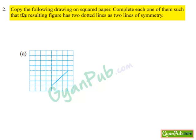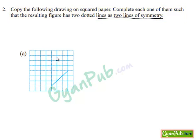The given question is: copy the following drawing on square paper and complete each one of them such that the resulting figure has two dotted lines as two lines of symmetry. Here they have given some dotted lines and a part of the figure. The given information is that the two dotted lines act as two lines of symmetry. They have given us a part of the closed figure and asked us to draw the remaining part such that the dotted lines will be the two lines of symmetry. Taking the horizontal line first, we have half of the object.